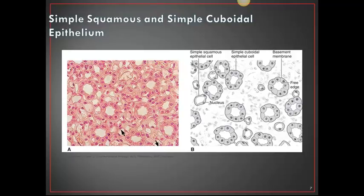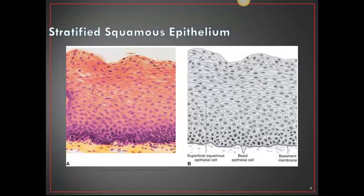Here is a picture of simple squamous and simple cuboidal epithelium. The simple squamous epithelium is shown forming tubules, indicated by the arrows, and simple cuboidal epithelium forms the walls of the tubules. In the stratified squamous epithelium image, there are many layers of cells, and toward the top the cells become flattened in the outer layers.